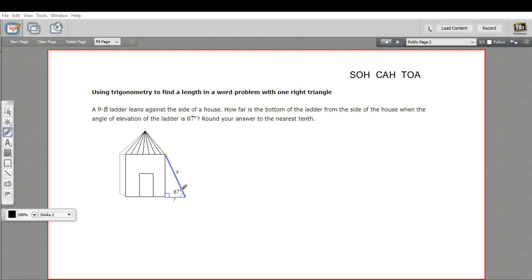So in this case, we know the angle of elevation, so that's just how far this ladder is up from lying flat against the ground, 67 degrees here. And we want to know how far away it is from the house, but we know how long the ladder is. It's nine feet long.